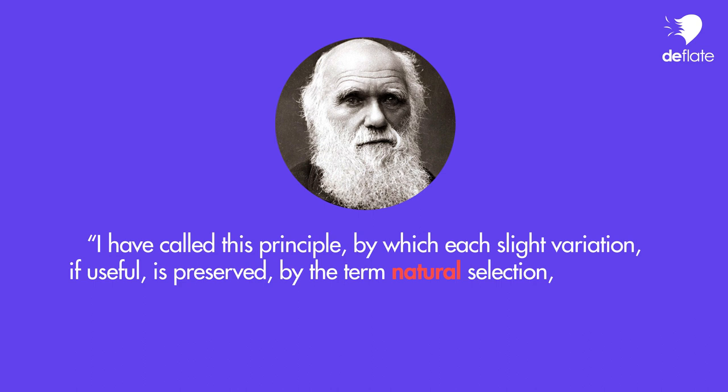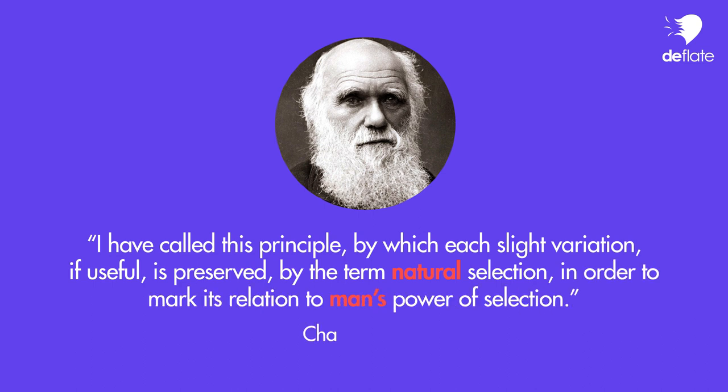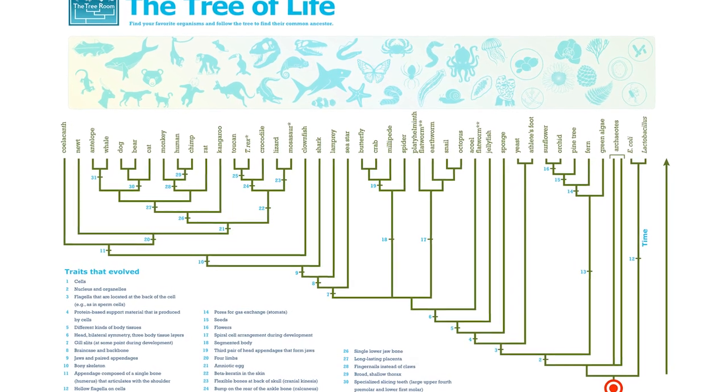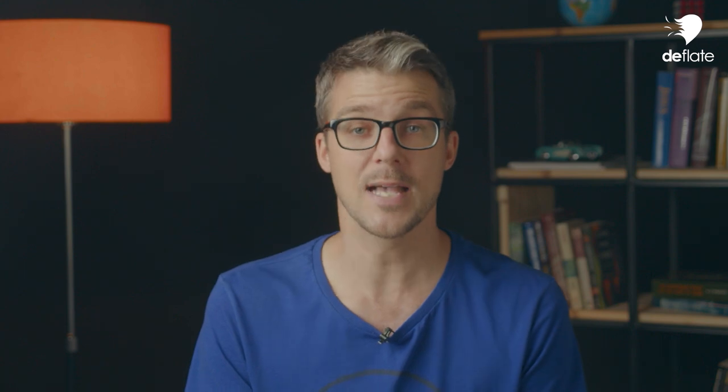Darwin said: "I have called this principle, by which each slight variation, if useful, is preserved, by the term natural selection, in order to mark its relation to man's power of selection." Darwin's hypothesis in the Origin of Species was essentially this: starting from one common ancestor, all life forms evolved slowly and gradually over long periods of time, as random mutation would bring up new traits from which natural selection would preserve the ones useful for survival.